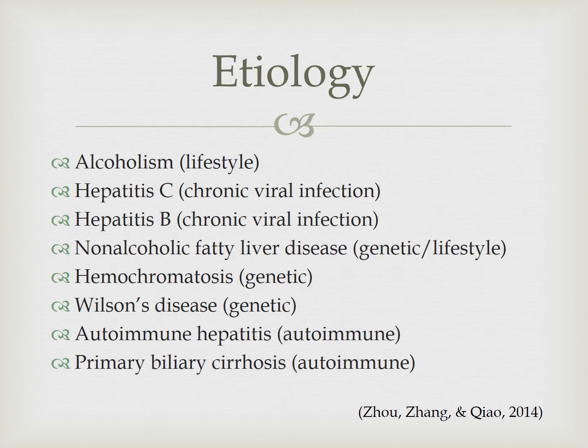Hemochromatosis and Wilson's disease are inherited diseases. Hemochromatosis involves high levels of iron in the body and Wilson's disease involves excess levels of copper, and both of those can be toxic to the liver. Autoimmune hepatitis and primary biliary cirrhosis are autoimmune disorders where the body attacks either the liver or the biliary epithelial cells, increasing inflammation and ultimately leading to cirrhosis.